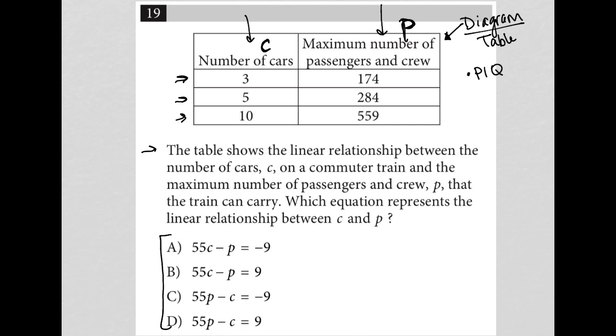The question is telling us, for instance, that for the first row when C equals 3, P equals 174. When C equals 5, P equals 284 and so on. When C equals 10, P equals 559. That means I can take these values, I can take this one for instance.